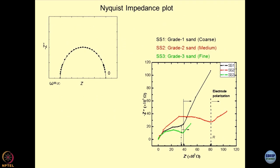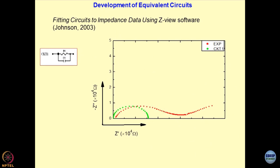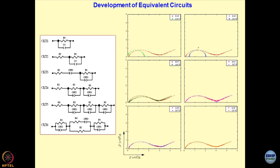We did a lot of experiments on soils of different types and sands, plotting real part against imaginary part. The intention is to show how these results can be utilized for characterizing geomaterials. We use the Z-view software, and the best way to analyze a soil mass is to create an equivalent circuit. A simple RC circuit will give you a lot of deviation from the experimental results, meaning you need to refine your circuits.